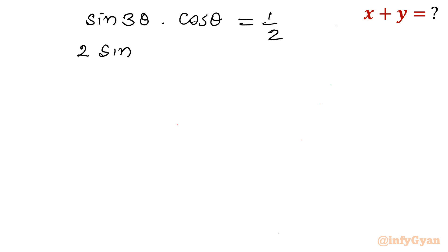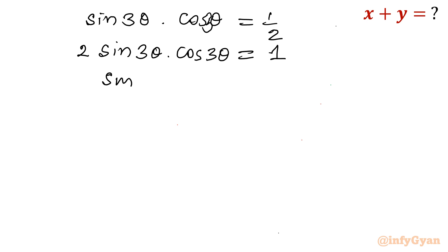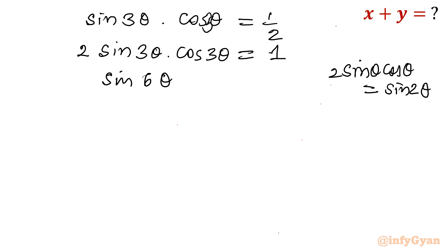Multiplying both sides by 2 gives 2 sin 3-theta times cos 3-theta equals 1, since 2 times one half is 1. You can recognize 2 sin A cos A equals sin 2A, so this becomes sin 6-theta equals 1.